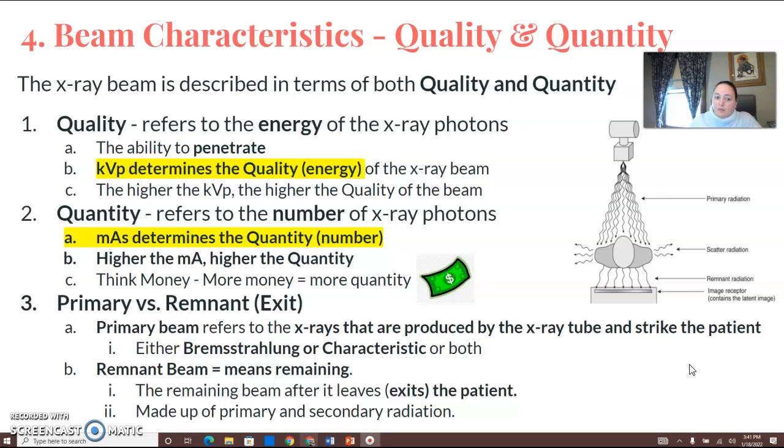Primary versus remnant beam. The primary beam is the beam that's produced in the tube and the x-ray beam that strikes the patient. It can be either Bremsstrahlung or characteristic or both.